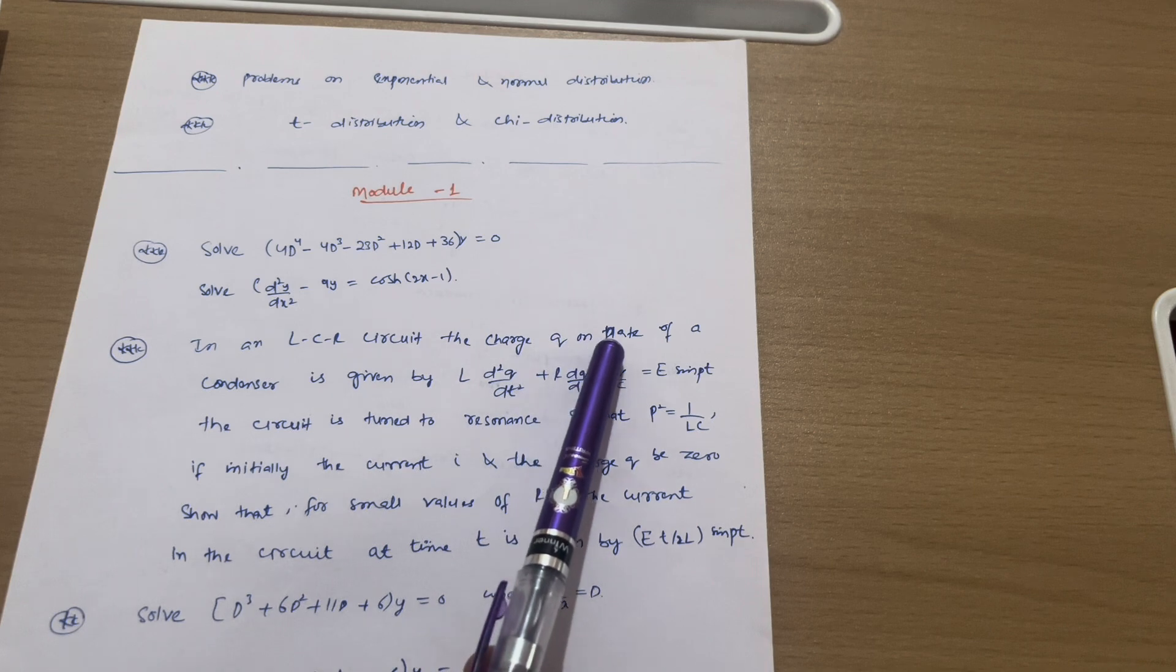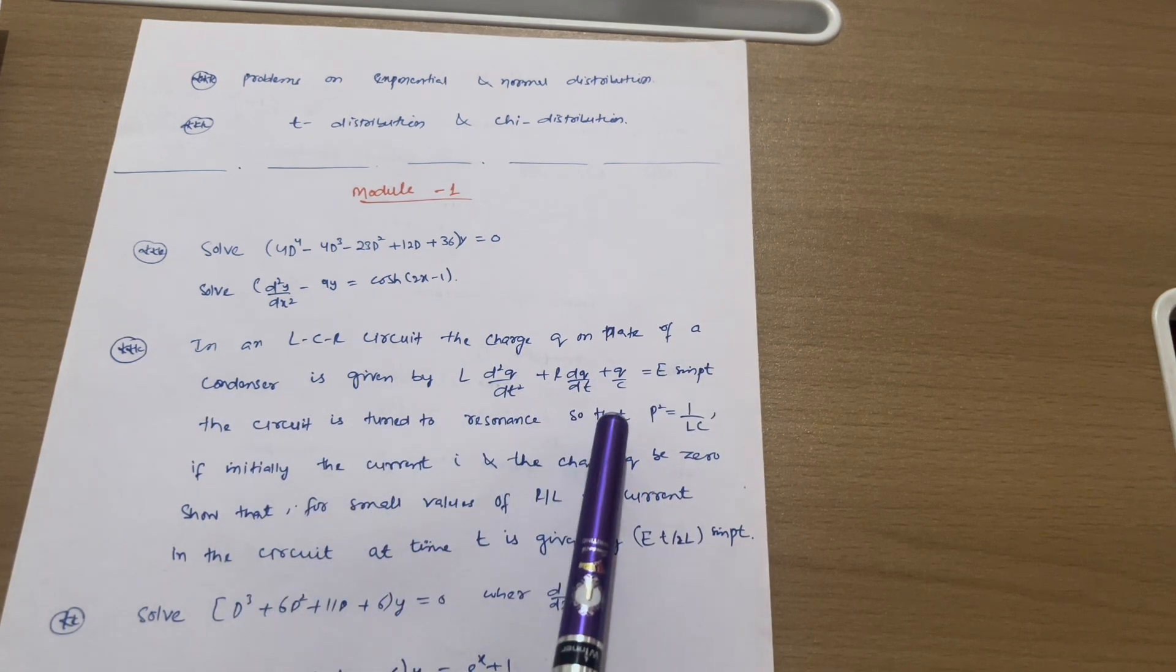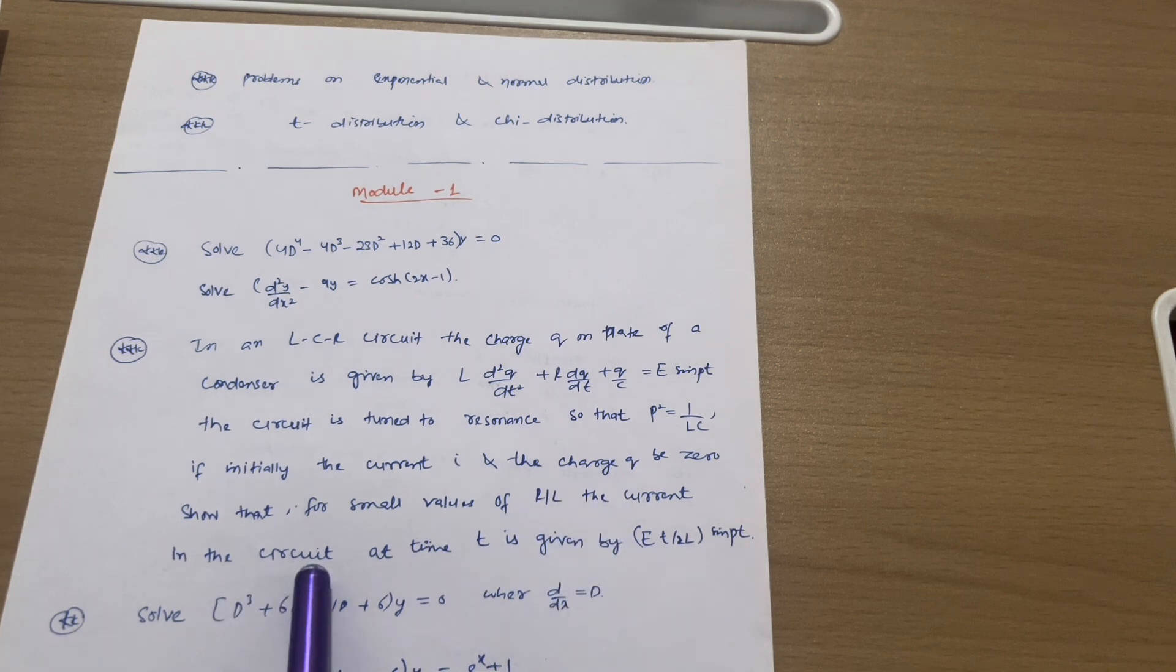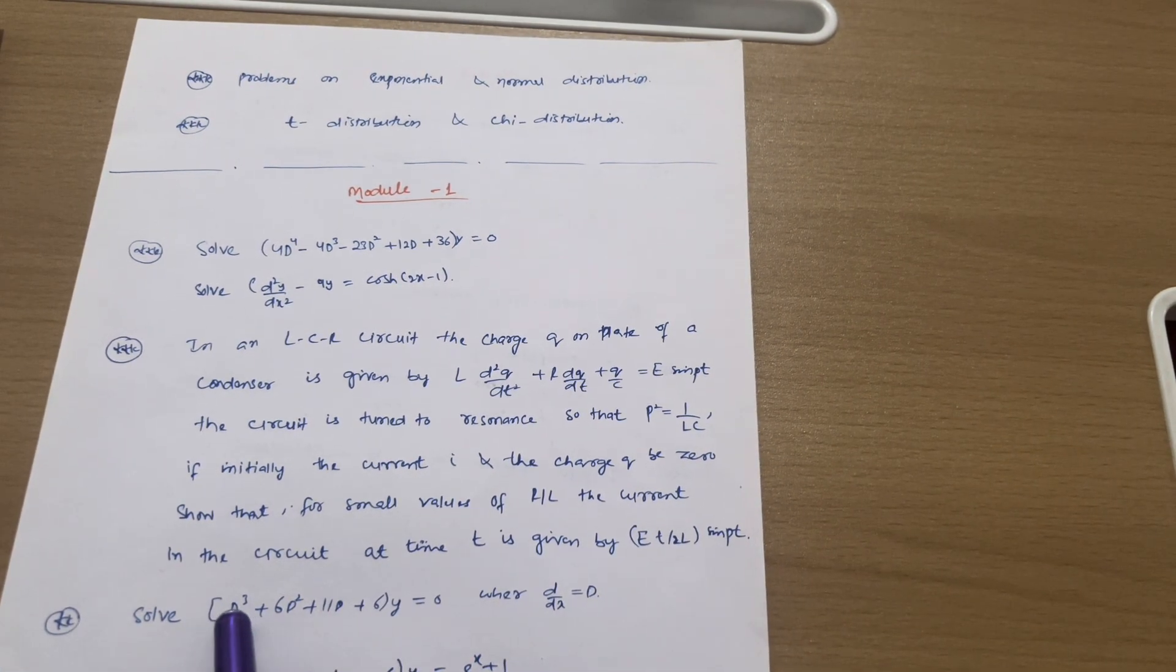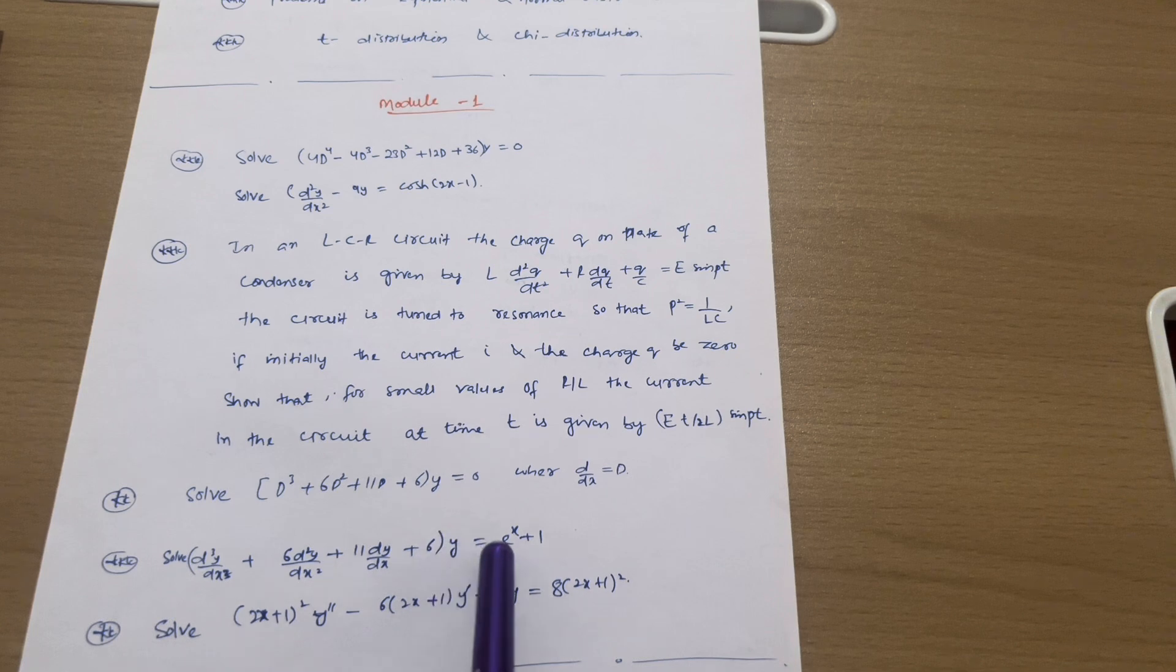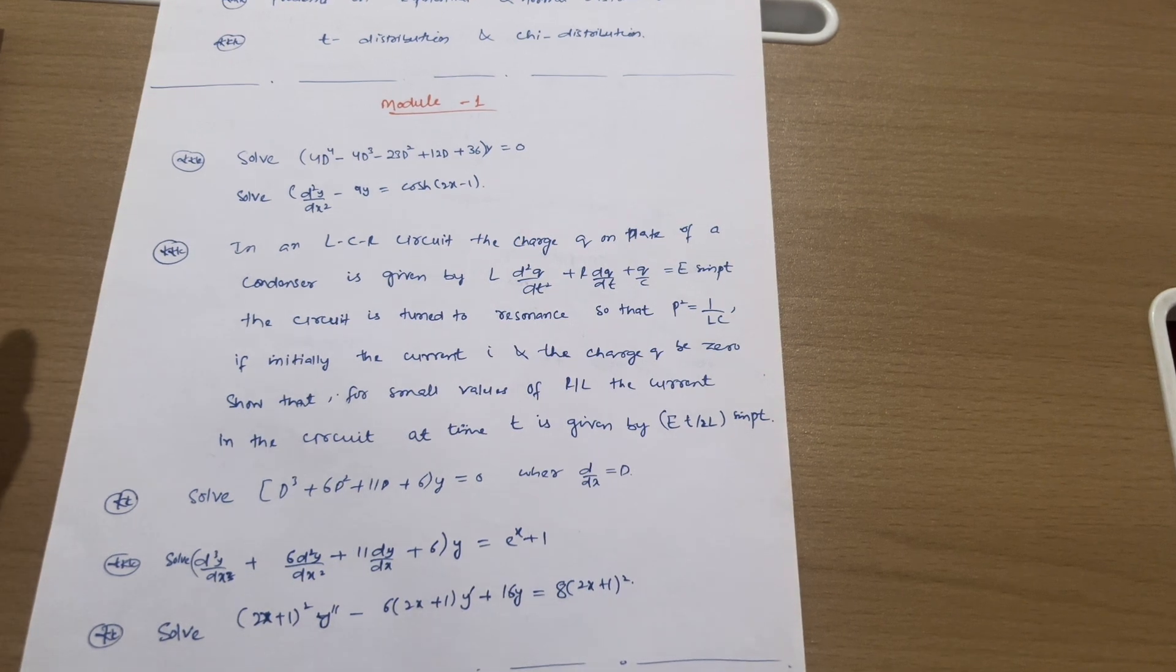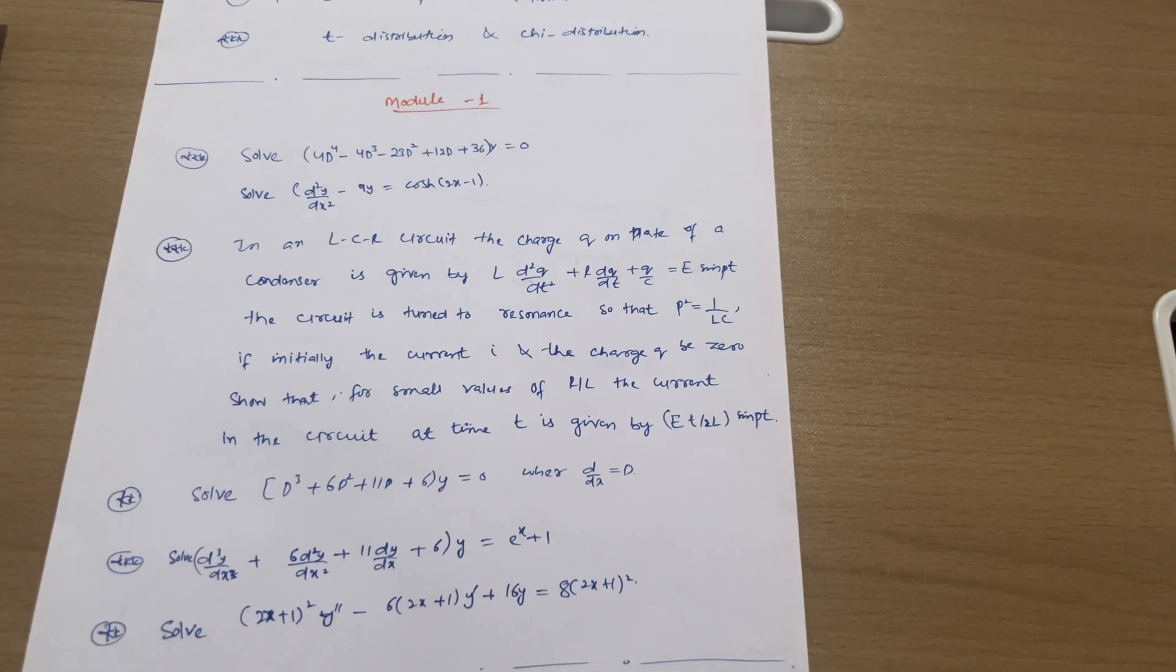In a LCR circuit the charge q on plate of a condenser is given by L(d²q/dt²) + R(dq/dt) + q/C = E sin(pt). The circuit is tuned to resonance so that p² = 1/LC. If initially the current i and the charge q be 0, show that for small values of R/L the current in the circuit at time t is given by Et/(2L) sin(pt). You should have some practice on this. Next we have solve (D³ + 6D² + 11D + 6)y = 0 where d/dx = D. Next solve d³y/dx³ + 6(d²y/dx²) + 11(dy/dx) + 6y = e^x + 1. And next solve (2x+1)²y'' - 6(2x+1)y' + 16y = 8(2x+1)². At least you should practice this module also if you are lagging behind in the concept of differentiation. You can go through youtube itself where topics are available and you can easily understand the concepts. This is all about module first.